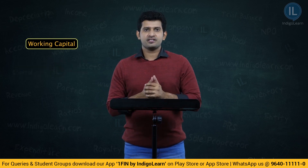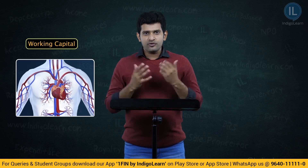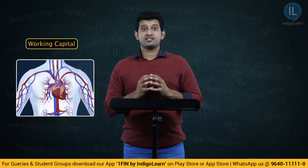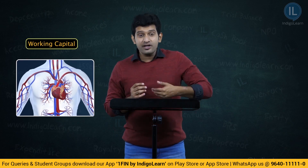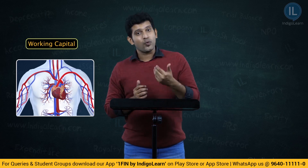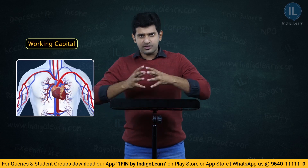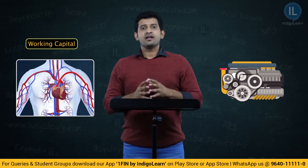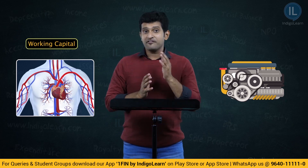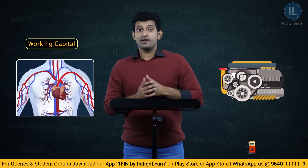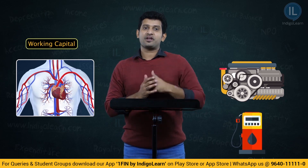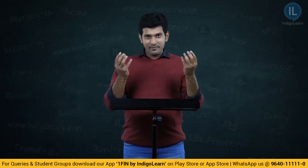Put it in simple words. If you take a human body, all the body parts are considered as fixed assets, while the blood which runs throughout the body can be called working capital. If you take an engine of a car, all the parts of the engine can be considered as fixed assets, whereas the fuel which runs throughout the engine and makes the car move can be called working capital.